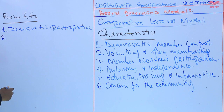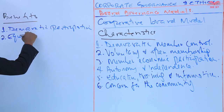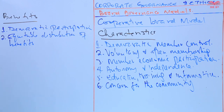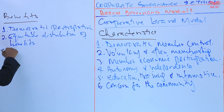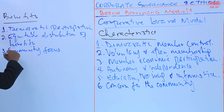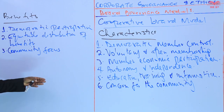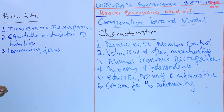The second benefit is equitable distribution of benefits. Profits are distributed among members based on their participation or usage of cooperative services, rather than on capital investment, leading to a more equitable allocation of resources. The third benefit is community focus — cooperatives prioritize the needs of the members and the broader community, contributing to local development and social well-being.